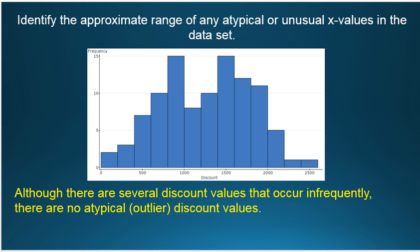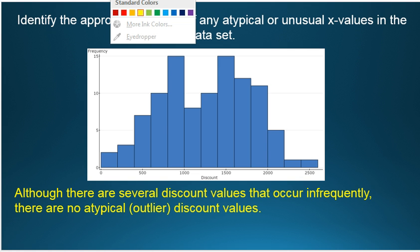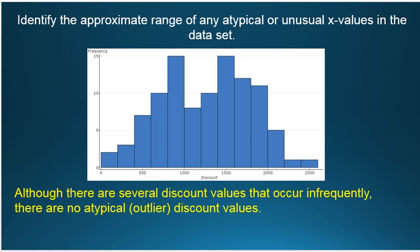Step three, identify the approximate range of any atypical or unusual values in the data set. All right, again, atypical doesn't mean it happens infrequently. Atypical in the context of statistics means that it basically is separated from the rest of the group.